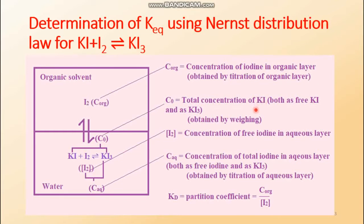C₀ is the initial amount of potassium iodide, obtained simply by weighing the solid KI at the time of preparing the aqueous solution. However, C₀ represents the overall concentration of free KI plus KI₃, because some of the KI that was weighed has combined with I₂ to form KI₃. So C₀ = [KI] + [KI₃].